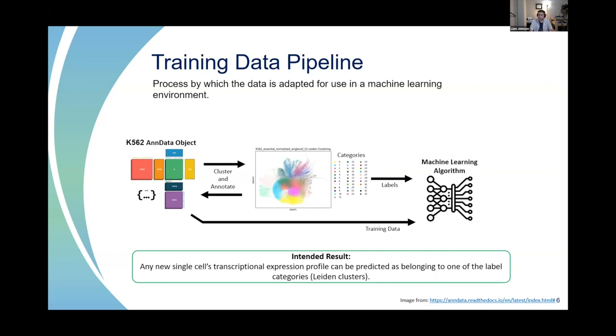Once I generated these Leiden clusters as categories, I could go back and annotate the AnnData object and assign each cell to its cluster, then feed that object to a machine learning algorithm. An AnnData object is a concatenated amalgamation of pandas dataframes that's really good for storing single-cell RNA-seq data.